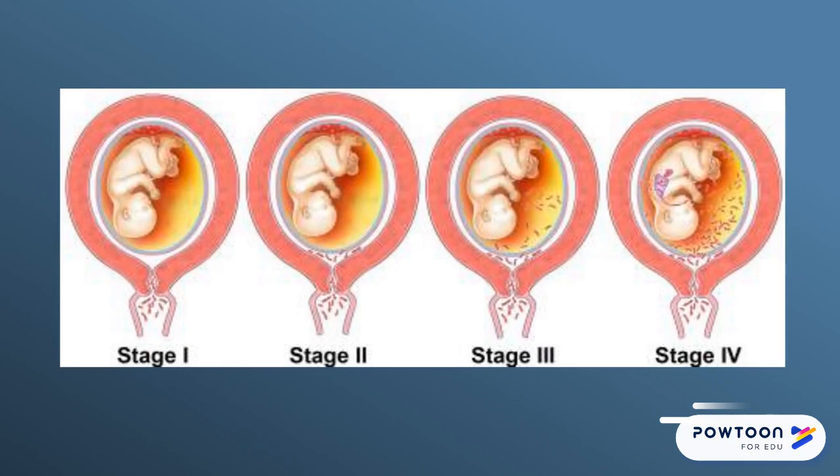This slide shows the stages of ascending intra-amniotic infection. In stage one, there is a change in the vaginal and cervical flora and the presence of pathological organisms. In stage two, microorganisms gain access to the amniotic cavity. In stage three, microorganisms cause intra-amniotic infection. In stage four, microorganisms can invade the fetus.